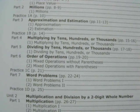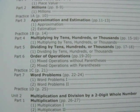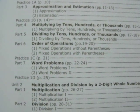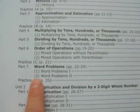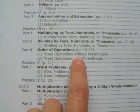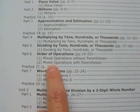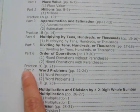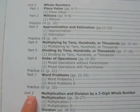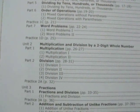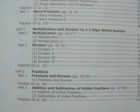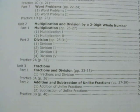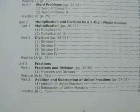Multiplying by tens, hundreds, or thousands. Dividing by tens, hundreds, or thousands. Order of operations. So they will be doing mixed operations without parentheses, and then mixed operations with parentheses in a practice. Part 7 is on word problems. Unit 2 is over multiplication and division by a two-digit whole number. Then you have a practice.